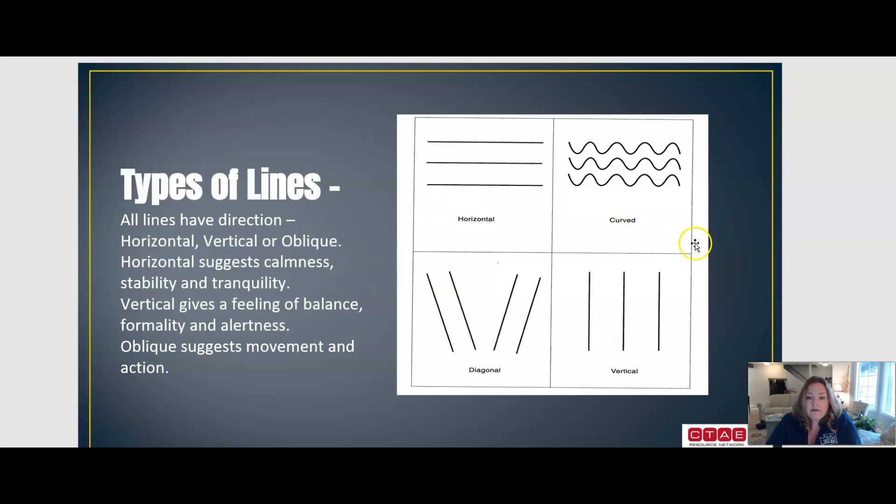So here we have different types of lines. All lines have a direction—horizontal, vertical, or oblique. Horizontal suggests calmness, stability and tranquility. Vertical gives a feeling of balance, formality, and alertness. Oblique suggests movement and action.